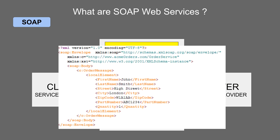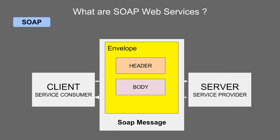Let us look at an example of a SOAP message. You can see there is the envelope, which is the root element. We do not have a header here because the header is optional, but if you want to give some username, password, and complex type information, that will go inside the header. Then we have a body which has the actual parameters of the request, like first name, last name, and so on. This is what a SOAP message looks like, and any SOAP web service will comply to these standards.